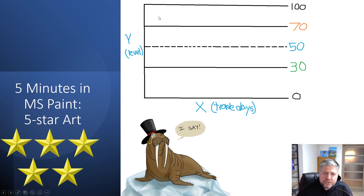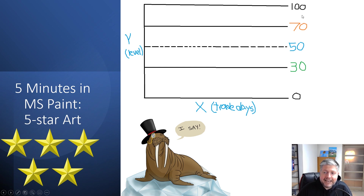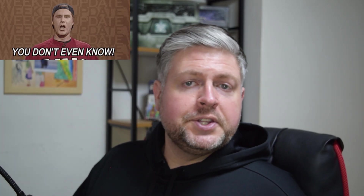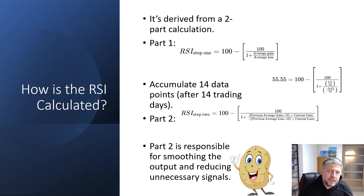I made some amazingly beautiful art — this took me like five minutes in MS Paint, five stars. Here's a blank RSI chart with no figures. On the y-axis we have our level: 30, 50, 70, 100. We could swap out 30 and 70 with 20 and 80, or go to 10 and 90, but this is the most common setup. On the x-axis we have trade days. Typically on RSI charts, the midpoint — the 50 level — is indicated with a dotted line.